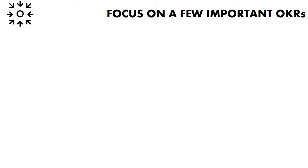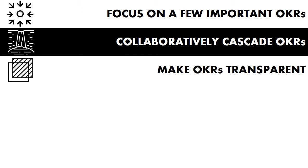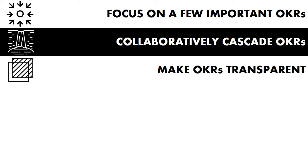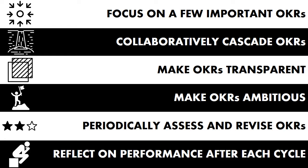So let's talk about the effective characteristics of an OKR system. First, we need to focus on a few important OKRs. We also need to collaboratively cascade OKRs throughout the organization. We need to make OKRs transparent and ambitious. We need to periodically assess and revise the OKRs. And finally, after an OKR cycle, we need to reflect on performance.